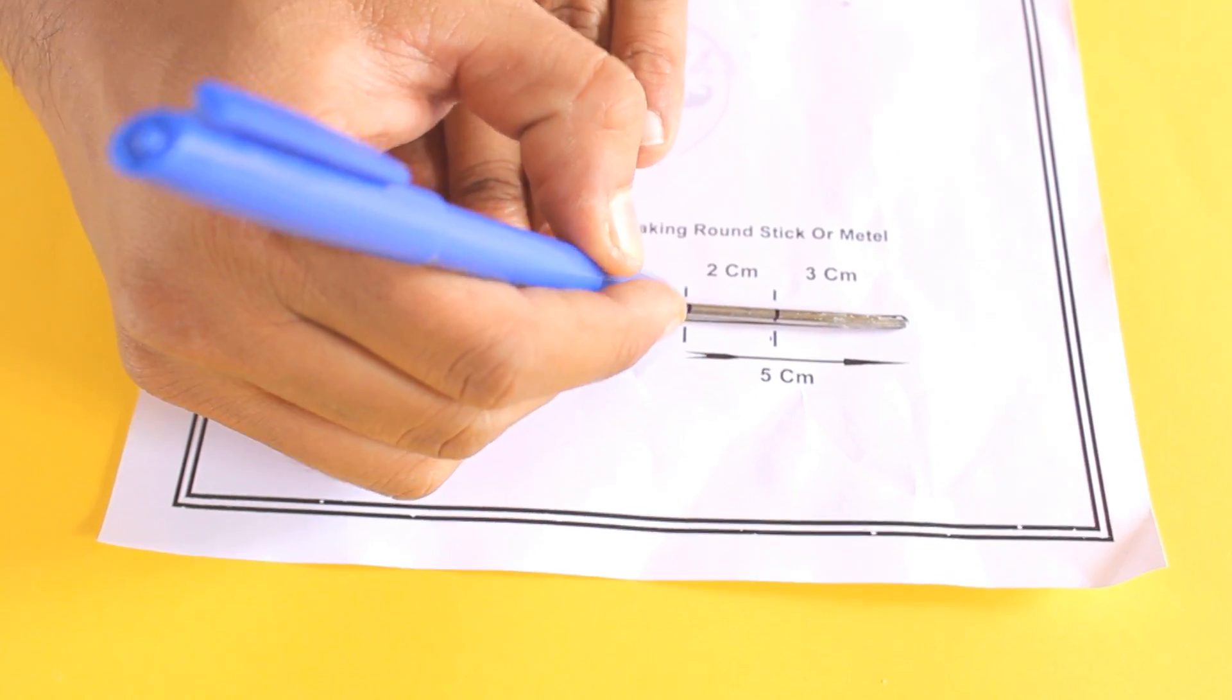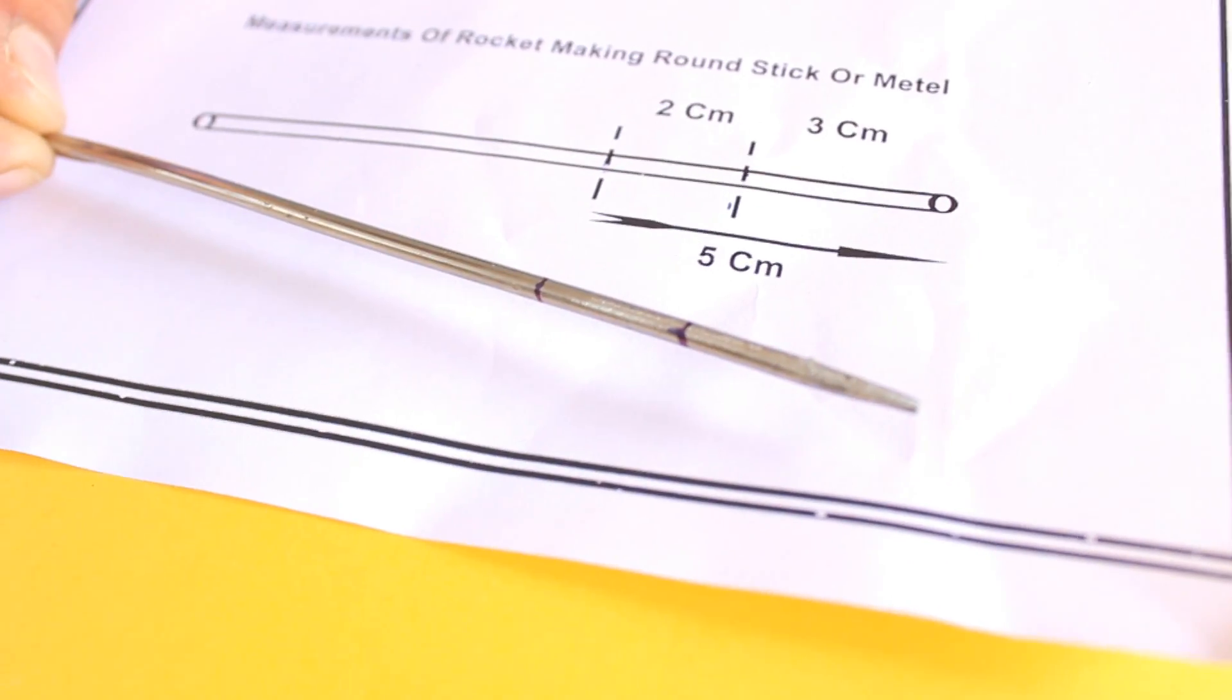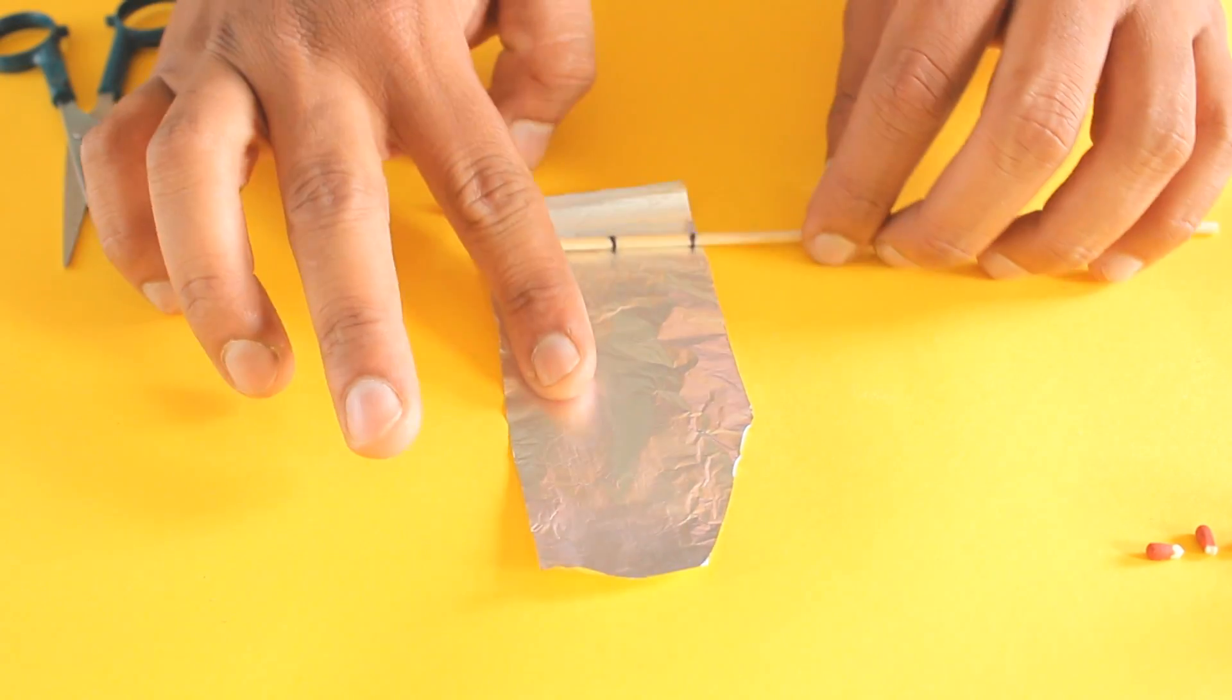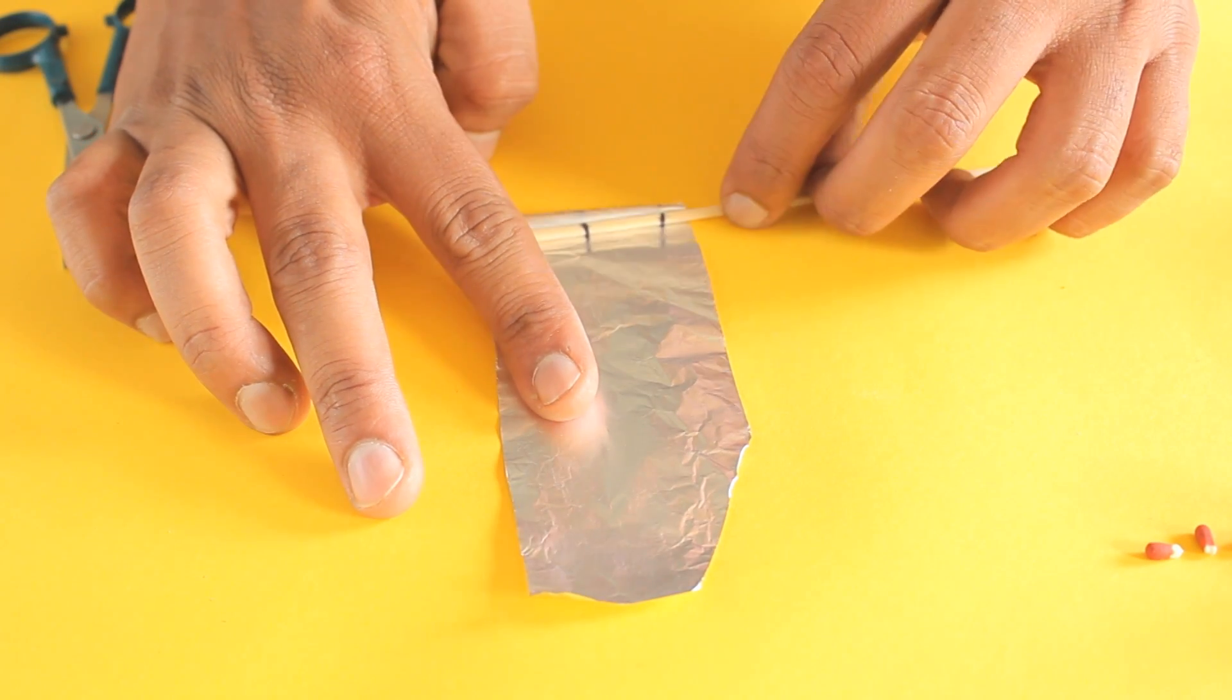All our arrangements are ready. Now let's go and build some rockets. Take a cut piece of aluminum foil and place the marked wooden skewer or a needle over it like this.